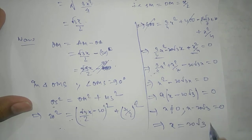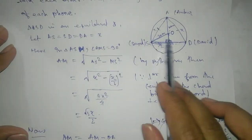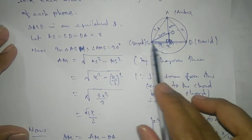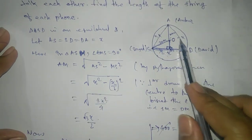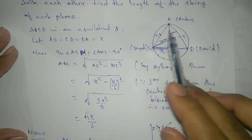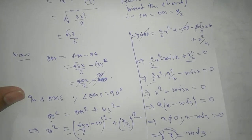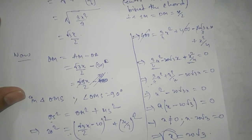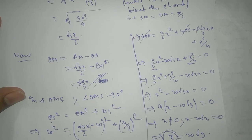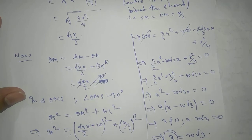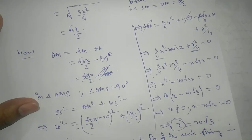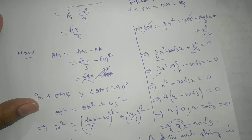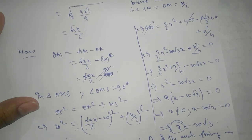Our target is to find X, the length of the string. The length of the string is SD, AD, and AS, which equals X. Therefore, X equals 20√3. So the length of the string is 20√3 meters. Thank you.